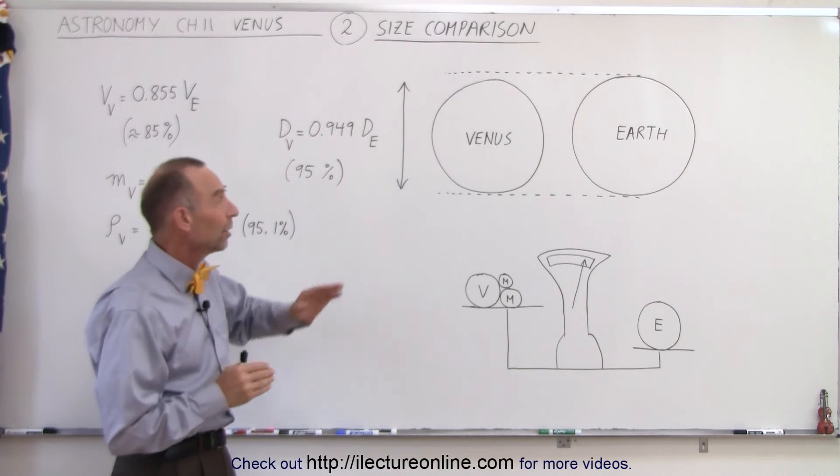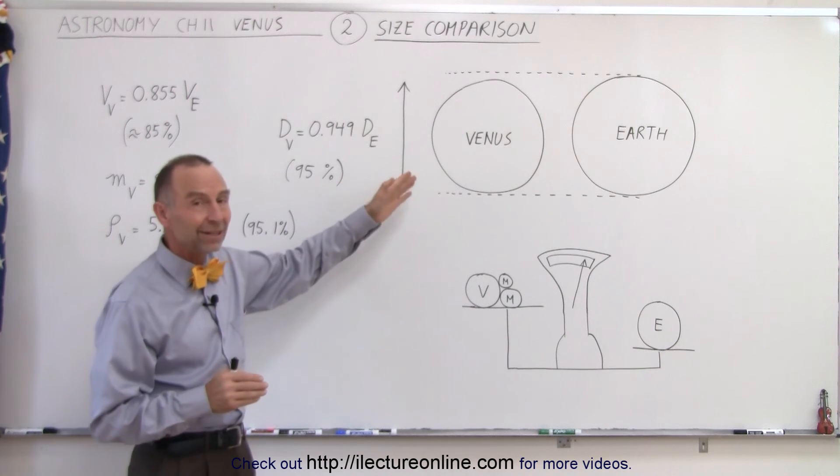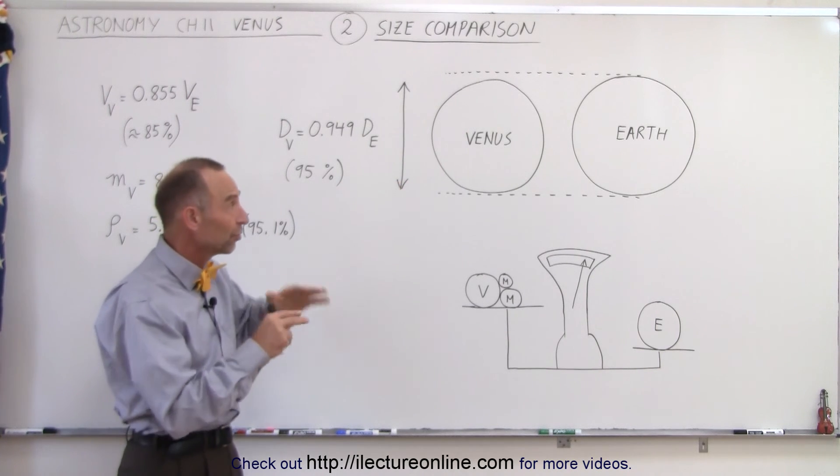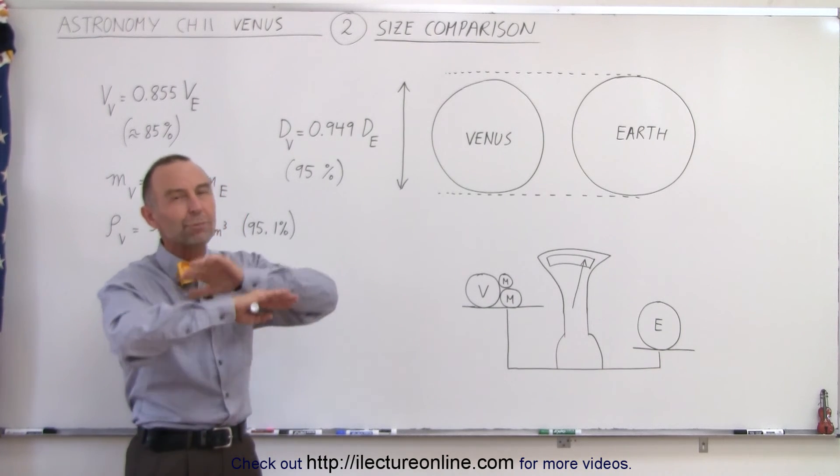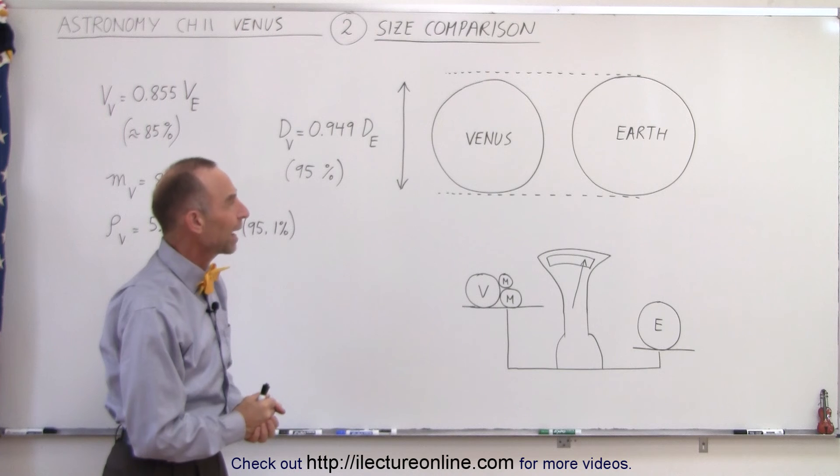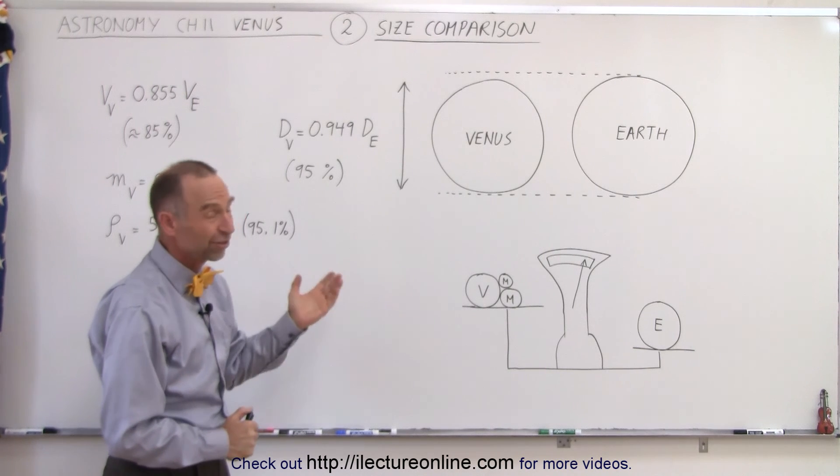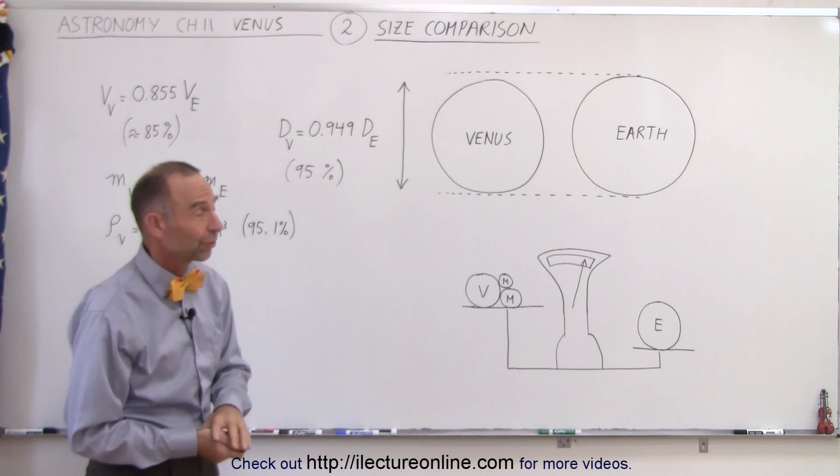So the reason why again there's so much to be looked at and seen on the surface of Venus is because not only is Venus almost the size of the Earth, there are no oceans so there's much more surface area to be looked at and to be studied and so we'll see that there's a lot to be seen on the surface of Venus.